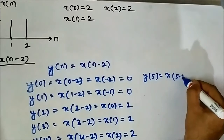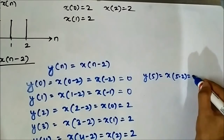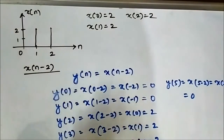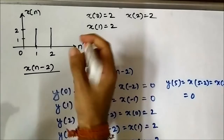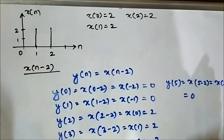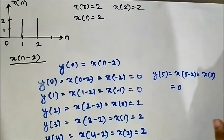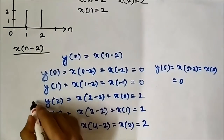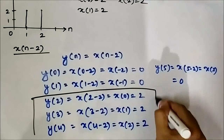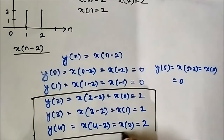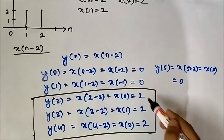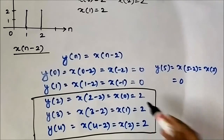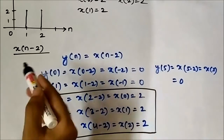At n=5: y(5) = x(5 − 2) = x(3) = 0, because at n=3 and beyond the value is 0. So going forward all values will be 0. The important points are y(2), y(3), and y(4) — these are the values at which the signal y[n] equals 2.